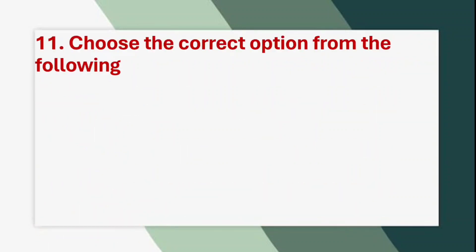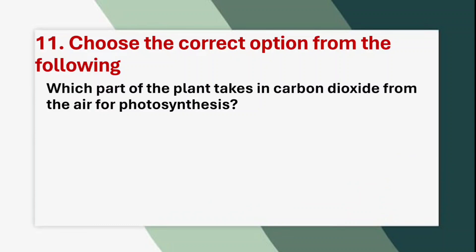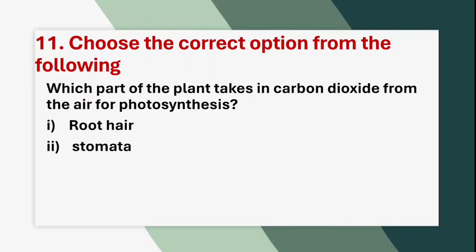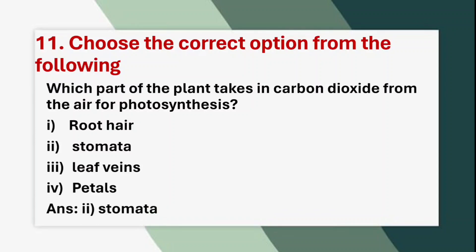Eleventh question — Choose the correct option: Which part of the plant takes in carbon dioxide from the air for photosynthesis? Option 1: Root hair. Option 2: Stomata. Option 3: Leaf veins. Option 4: Petals. The correct answer is option 2: Stomata.